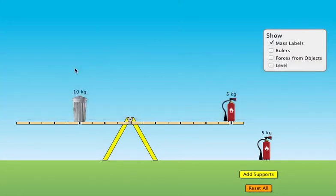What we're balancing here is we're balancing torques. So we have this 10 kilogram trash can, and he's creating a torque counterclockwise. We have the 5 kilogram fire extinguisher, and he's creating a torque clockwise. And since it's in equilibrium, we know that torque equals torque.